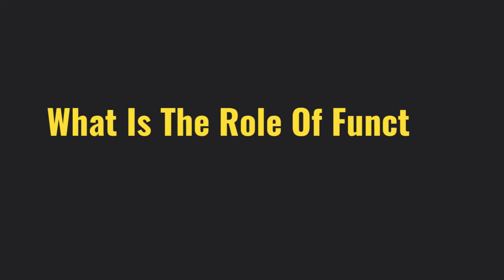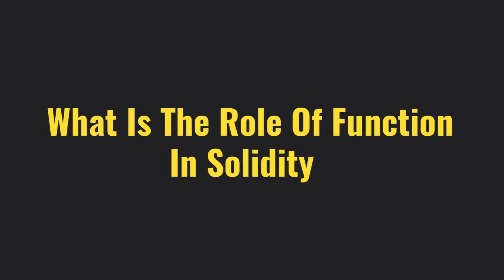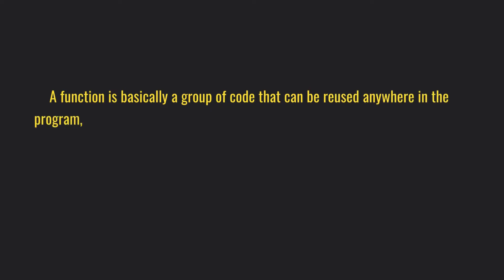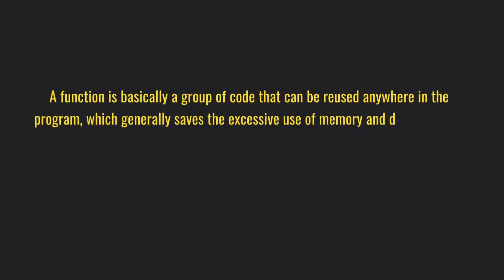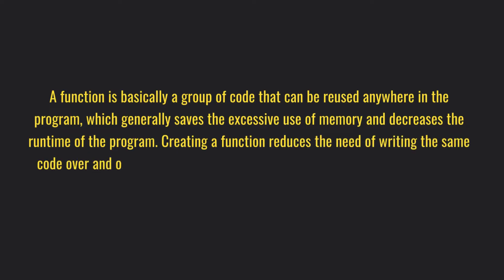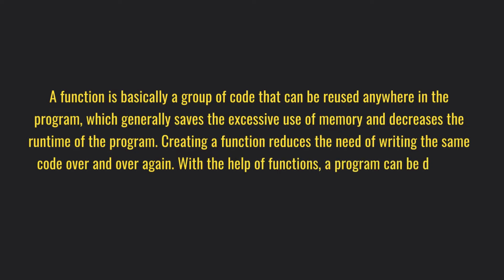When asked in an interview about the role of functions in a Solidity smart contract, here is how to answer: a function is basically a group of code that can be reused anywhere in the program, which generally saves memory and decreases the runtime of the program. Creating a function reduces the need to write the same code over and over again, and a program can be divided into smaller pieces of code for better understanding.